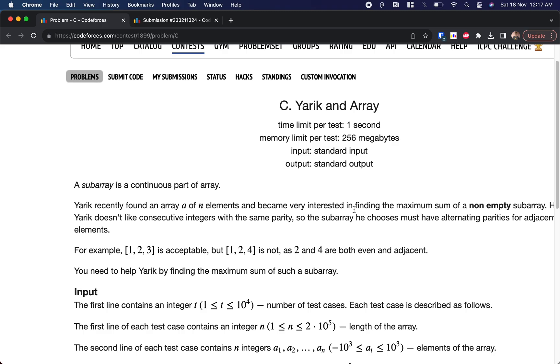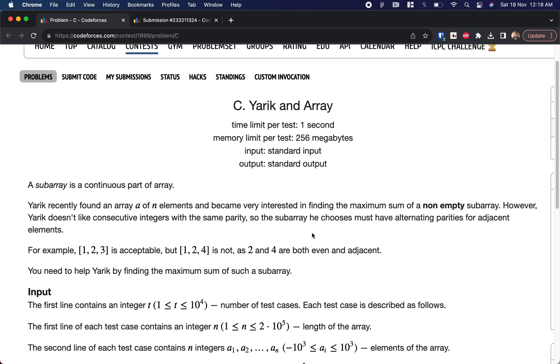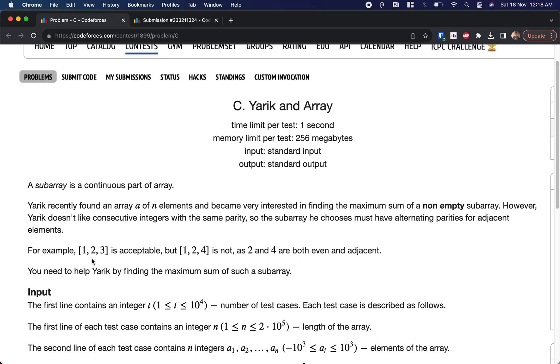One more thing is if we choose a subarray, it should have alternating parities for adjacent elements. What do you mean by parity? It is either odd or even. Parity represents the state of that. So if the subarray is like 1, 2, 3, it is acceptable why? 1 is odd, 2 is even, 3 is odd. But 1, 2, 4 is not acceptable because 1 is odd, 2 and 4 are consecutive and adjacent and both are even. So we cannot consider that subarray.